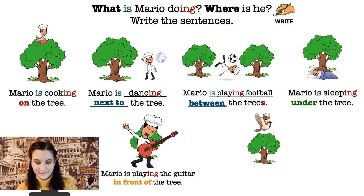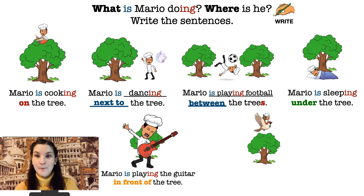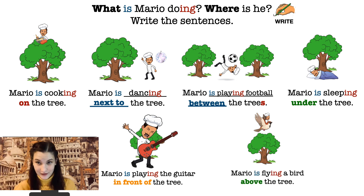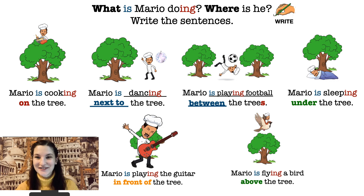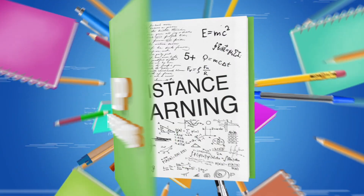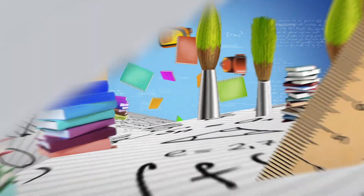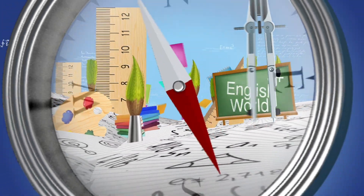And the last picture — pause the video and write the sentence yourself, and then we'll check. So what is Mario doing? Mario is flying a bird above the tree. I hope you have the same answers in your copy books. Don't forget to take a picture and send it to your teacher. Have a good day everyone — our lesson is over and I will talk to you soon. Goodbye!